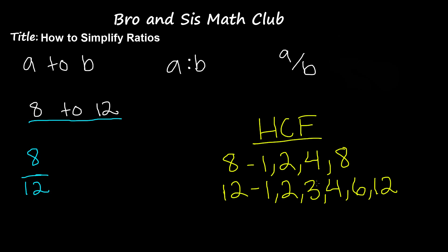Now we must find the highest common factor. The highest common factor among these factors is the number 4. So now we divide both 8 and 12 by 4.